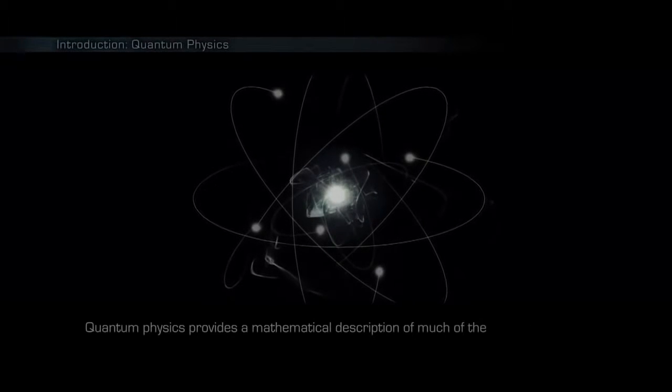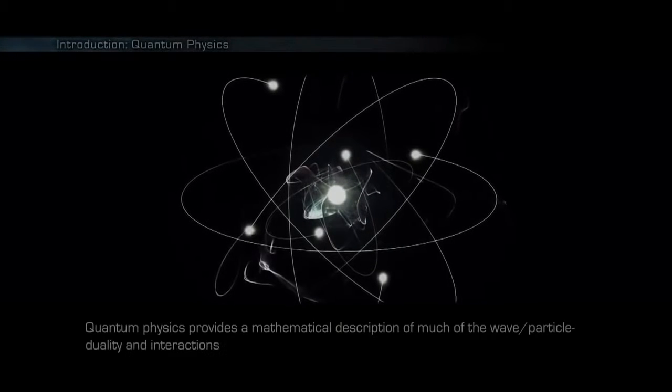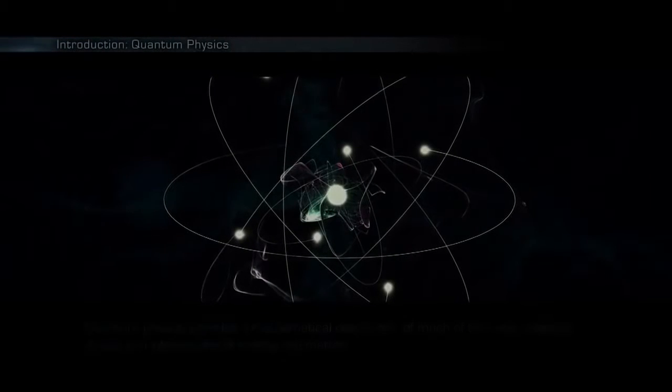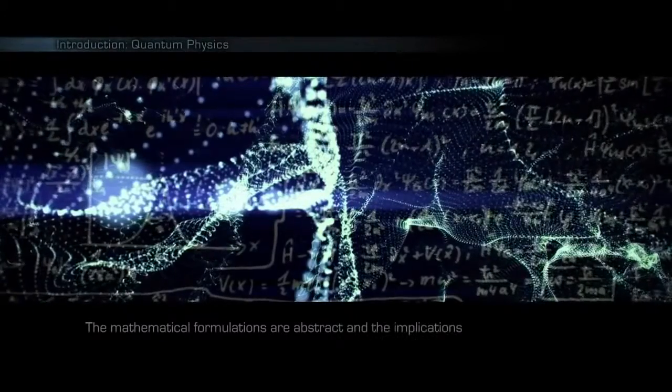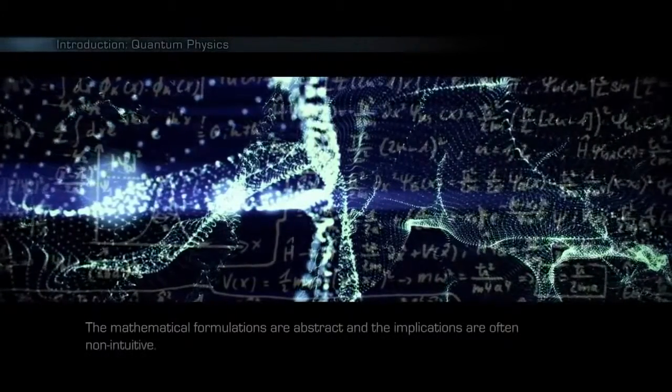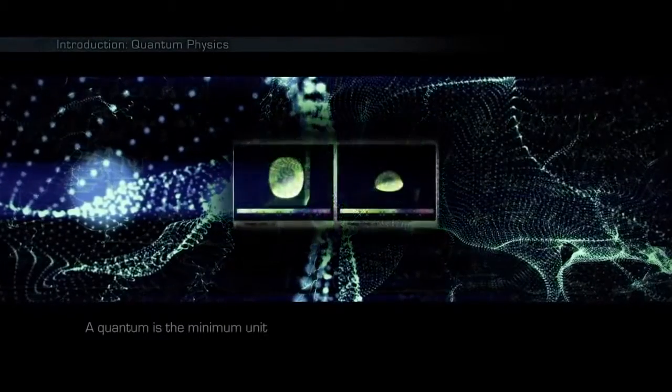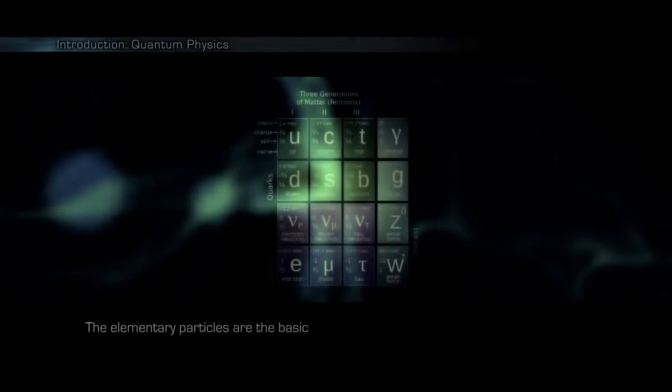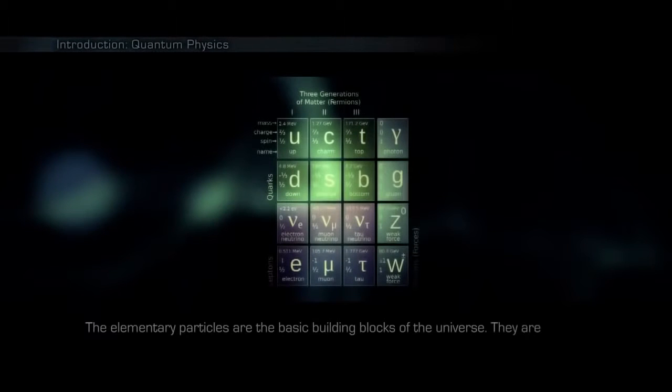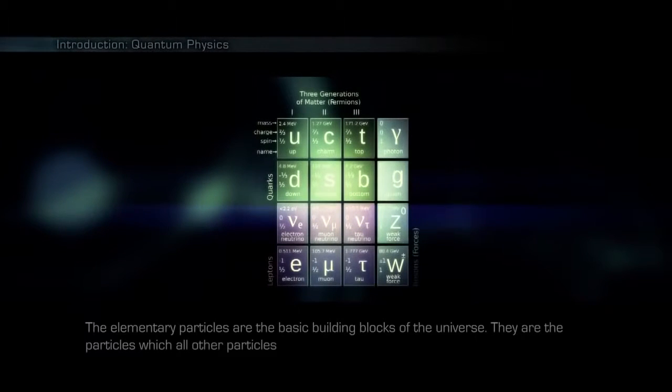Quantum physics provides a mathematical description of much of the wave-particle duality and interactions of energy and matter. It departs from classical physics primarily at the atomic and subatomic scales. The mathematical formulations are abstract and the implications are often non-intuitive. A quantum is the minimum unit of any physical entity involved in an interaction. The elementary particles are the basic building blocks of the universe. They are the particles which all other particles are made of.